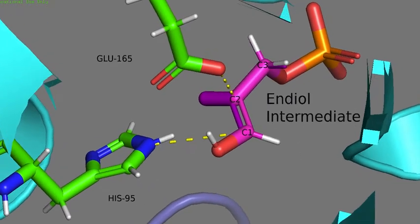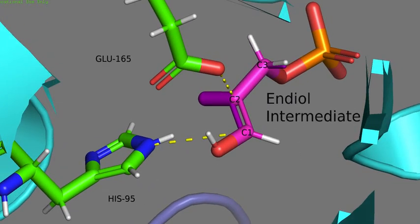In the next step, glutamate-165 donates a proton and histidine-95 abstracts a proton from the C1 hydroxyl group. This effectively collapses the endiol intermediate and the G3P product isomer is formed.